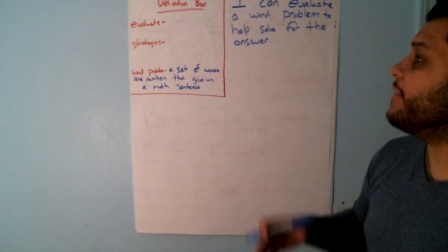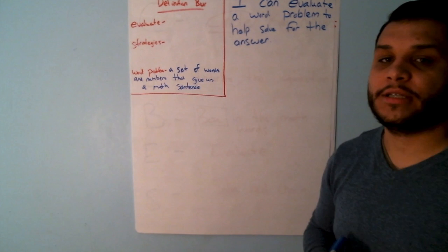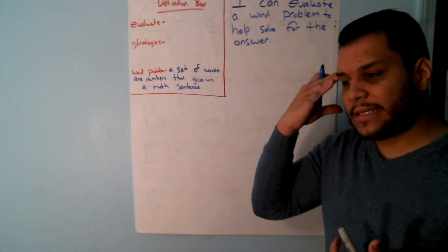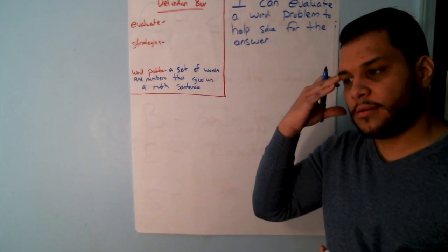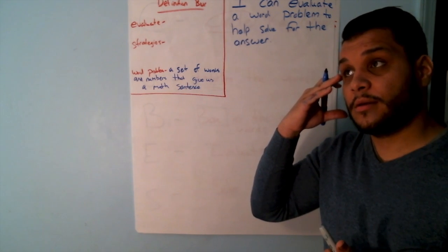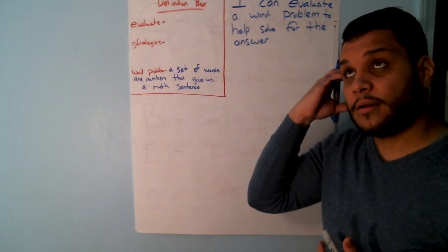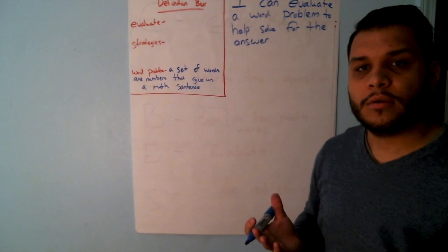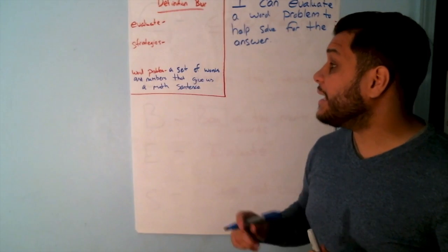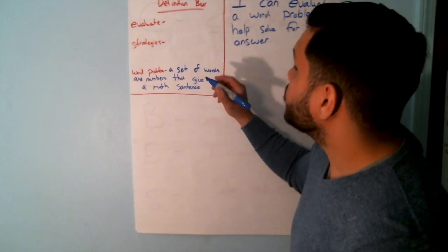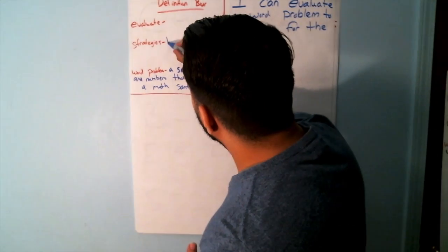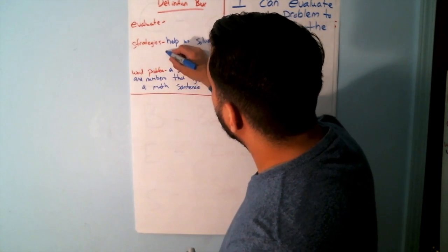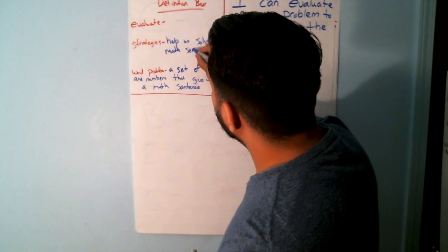I have evaluate and I have strategies. So we've heard that word strategies throughout this week. Let's think about what are examples of our strategies. Number lines, the analog clock, and addition. So strategies help us solve math sentences.